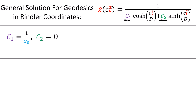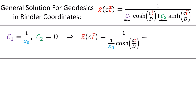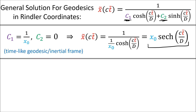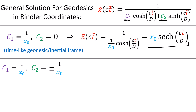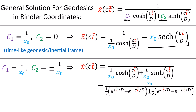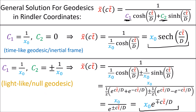For example, if we set c1 equals 1 over x-naught and c2 equals 0, we get that x-tilde equals x-naught times the hyperbolic secant of ct-tilde over d. This is exactly what we got for our timelike geodesic — an inertial frame — in the first part of this video. Or if we set c1 to 1 over x-naught and c2 to plus or minus 1 over x-naught, rewriting cosh and sinh in exponential form and doing some cancelling, we get x-tilde equals x-naught times the exponential of plus or minus ct-tilde over d. This is exactly what we got for our light-like geodesics traveling left or right.